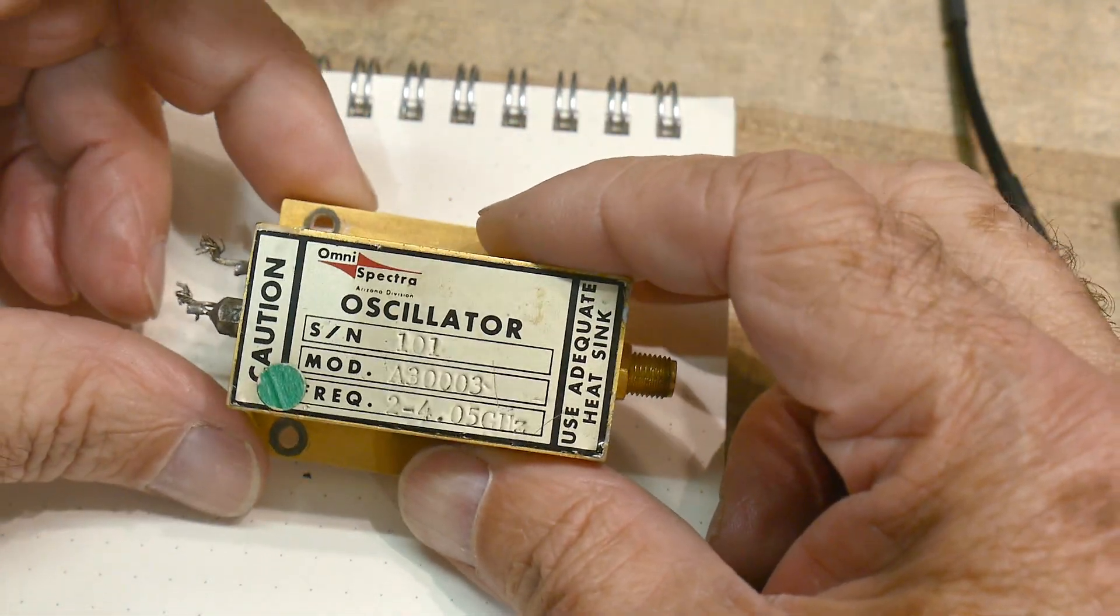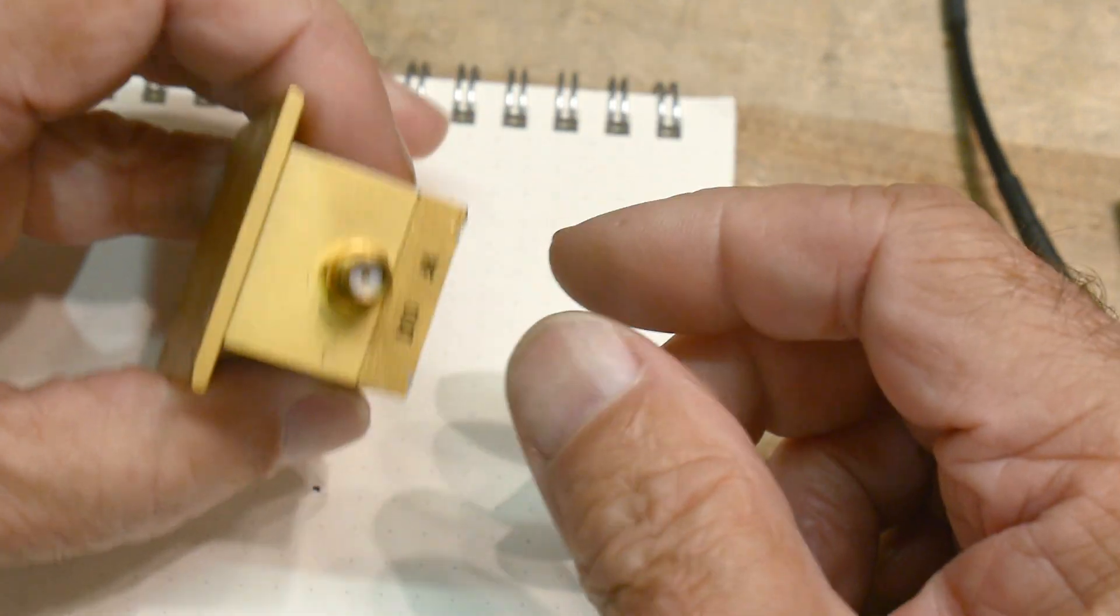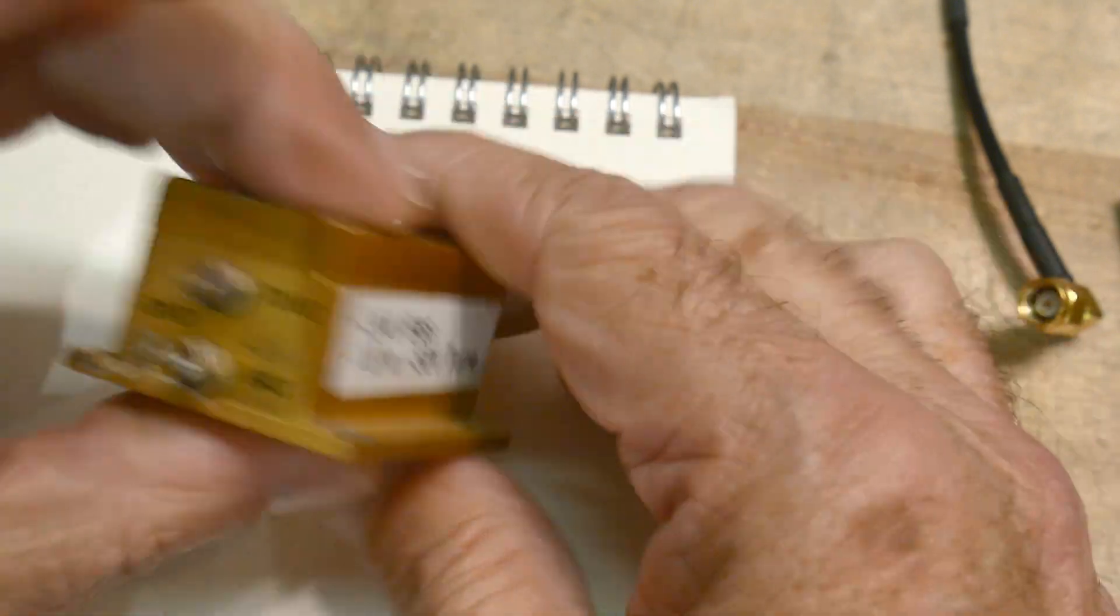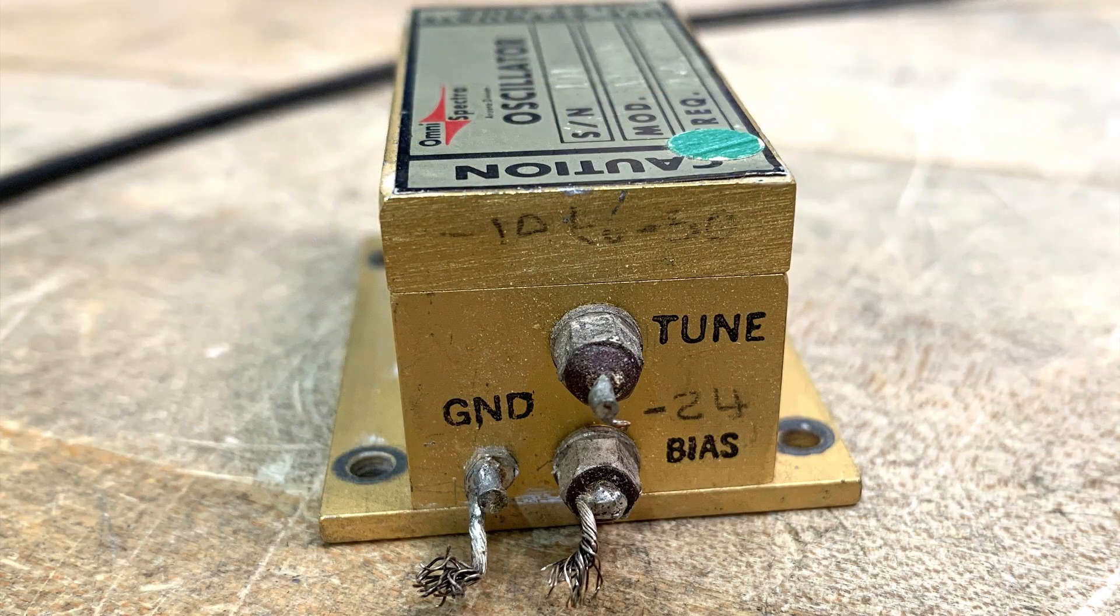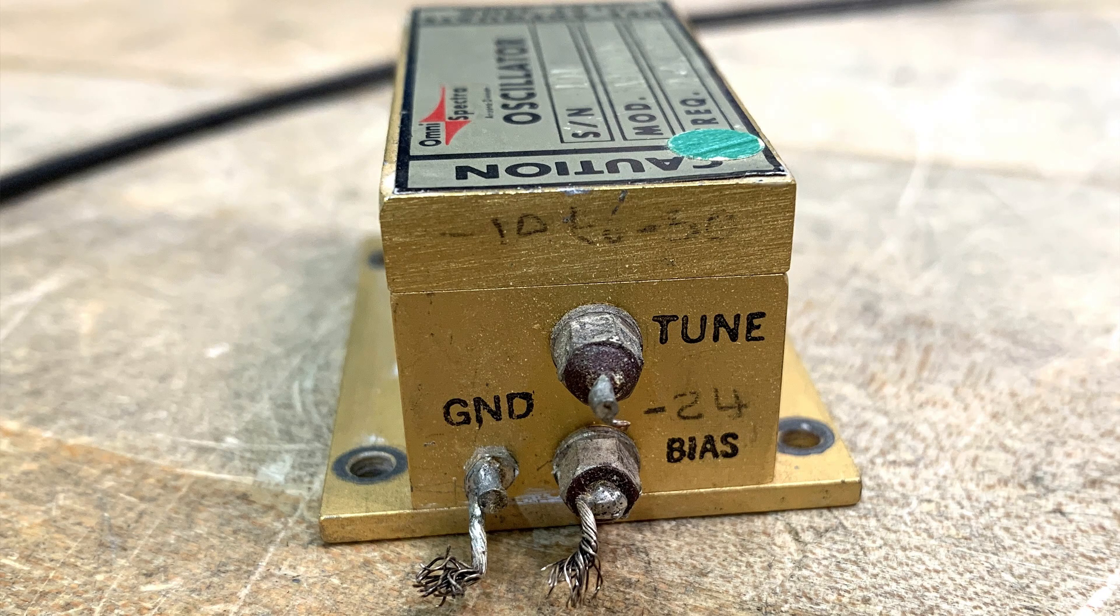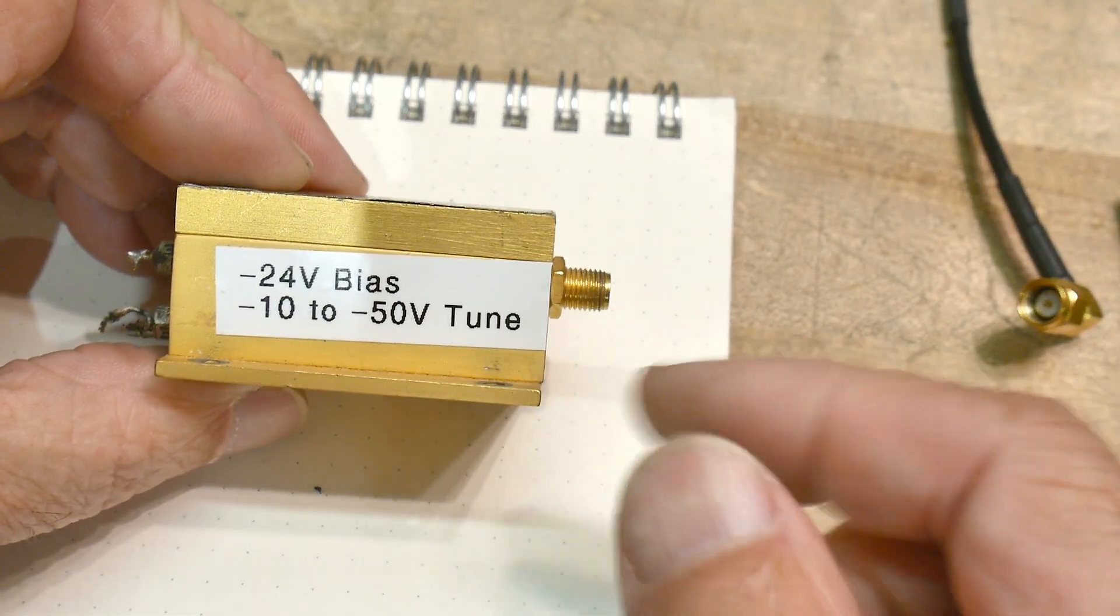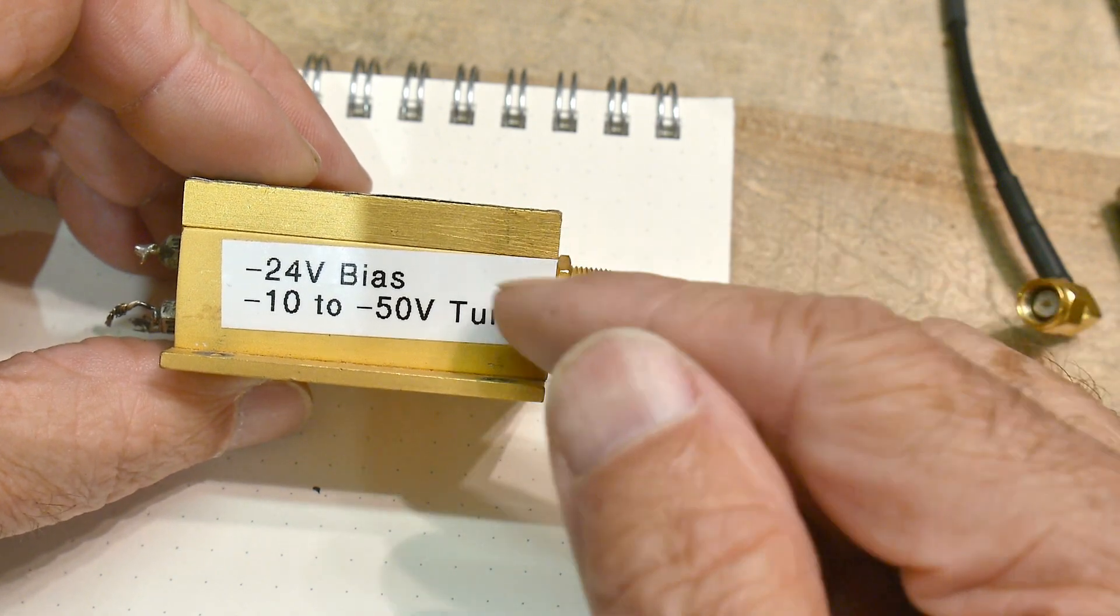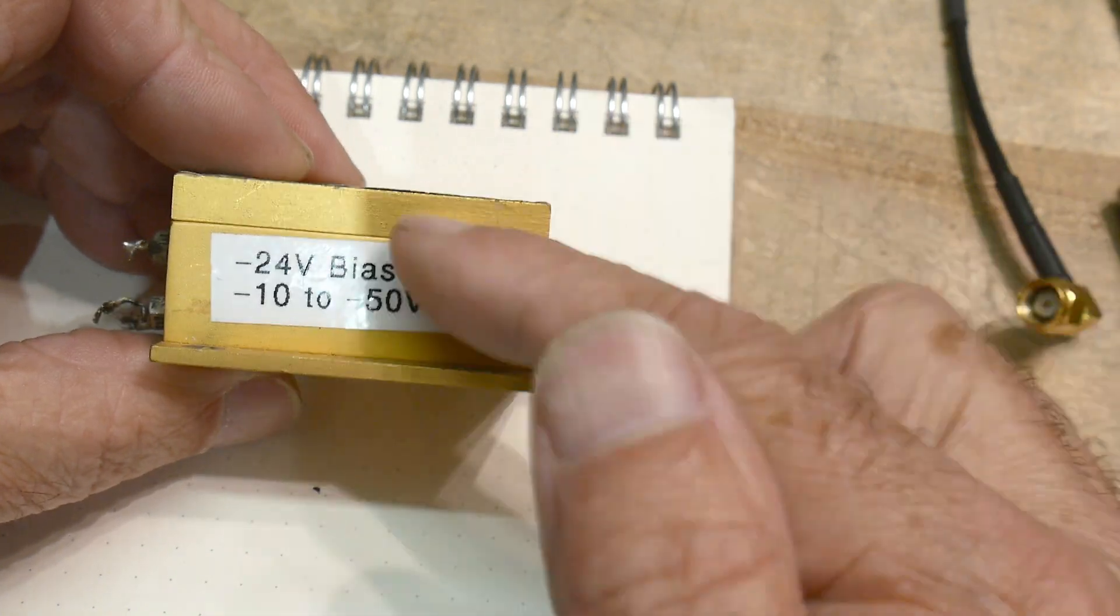I'm not exactly sure what technology this uses, it's this nice gold, big fat gold thing, it says RF out, and then it's got some things for here. Somebody before me had written some notes on it, so it's got a minus 24 volt bias, and I believe that says minus 10 to minus 50 volts of tune. So I've gone ahead and made a new label on the side, so in case that one rubs off, I know this is what's going on.